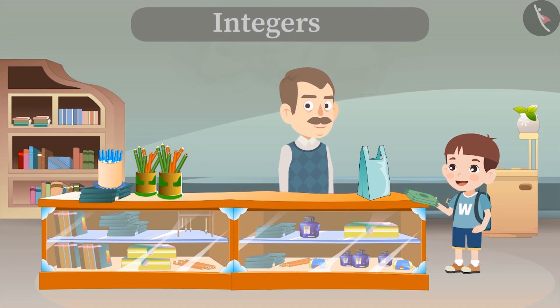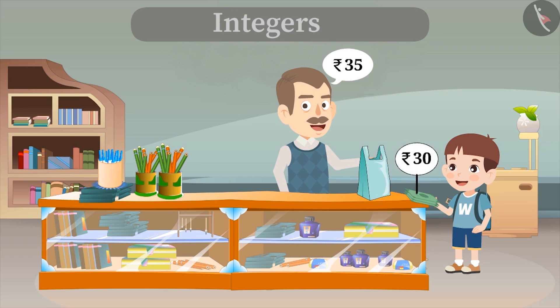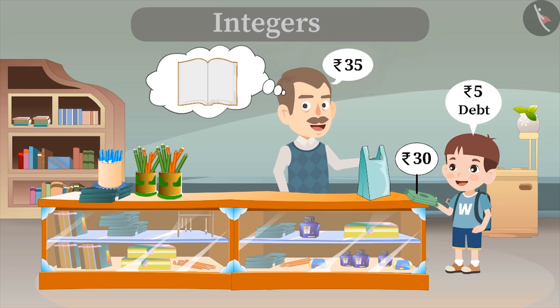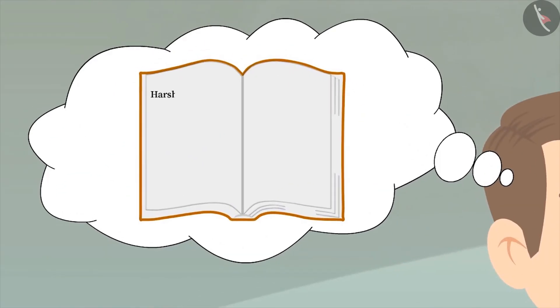Now let's suppose Harsh came to a shop with Rs. 30, but he bought things worth Rs. 35. He pays the shopkeeper Rs. 30 and keeps a debt of Rs. 5. The shopkeeper should write minus 5 in front of Harsh's name, where the negative sign represents the money Harsh has yet to pay. Harsh owes him Rs. 5.